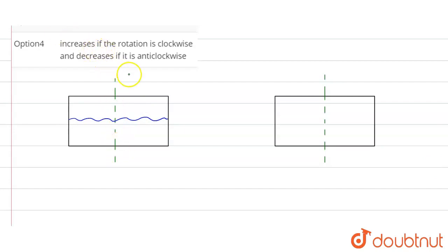So this is the axis of rotation and if it is rotated about this axis, what will happen? So let's say this is the condition when the body is rotated. Let's say the body is rotated like this with some angular velocity omega.